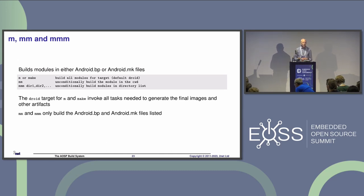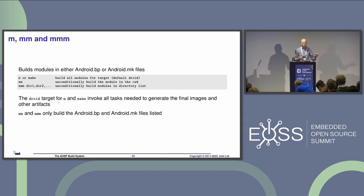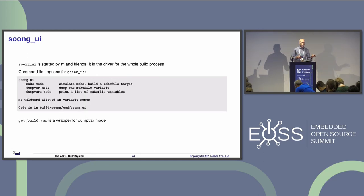We also have variants: `mm` and `mmm`. If you type `m` or `make`, that builds the entire thing towards a target called `droid`. If you just want to build a single module, change into the directory containing the Android.bp or Android.mk file and type `mm` — that runs the build system targeting just that one module, usually much faster. `mmm` is similar, except you can give one or more directories as parameters and it will run `mm` in each directory.